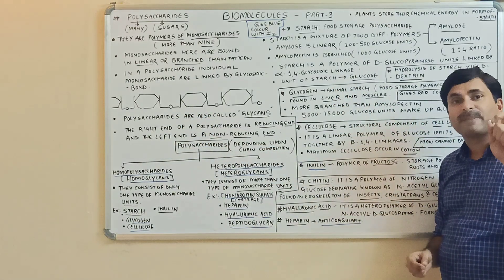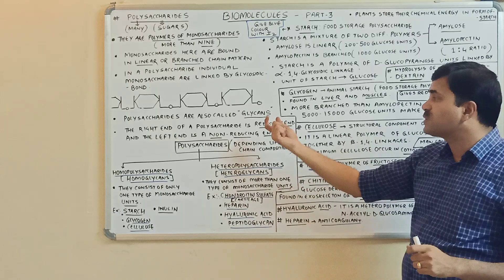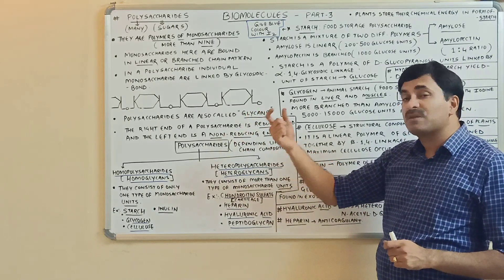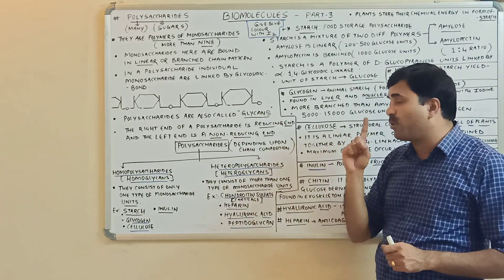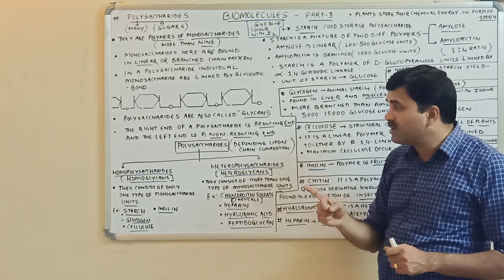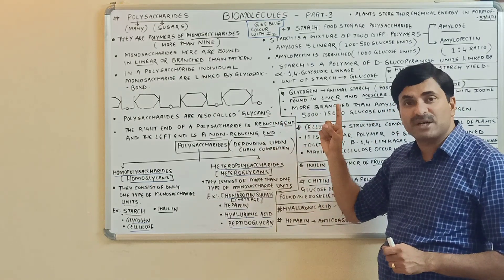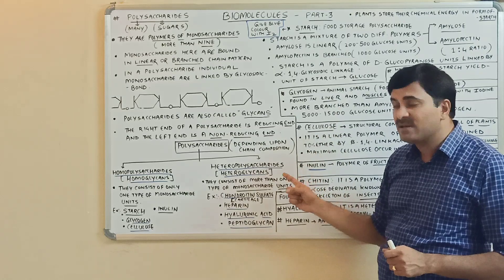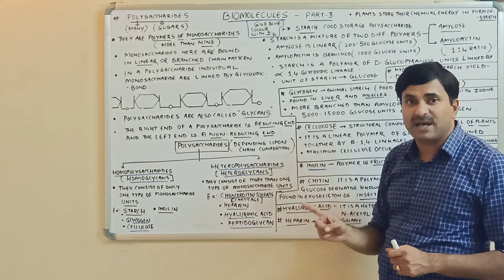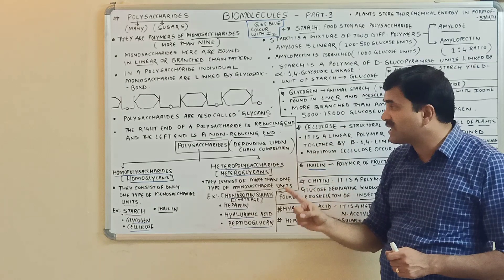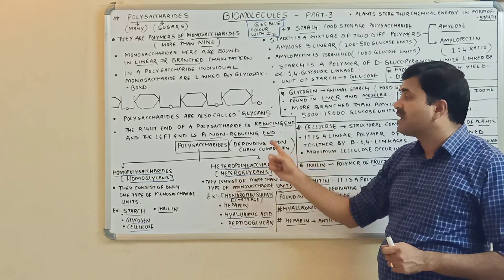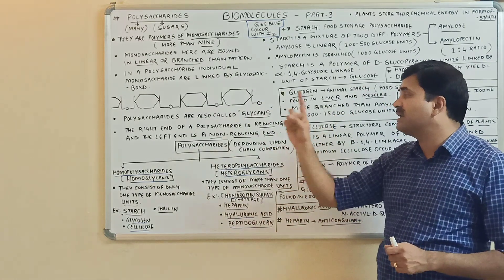These polysaccharides are also called glycans. The right end of the polysaccharide is called the reducing end, and the left end is the non-reducing end.